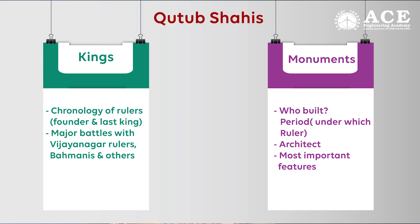The next dynasty to focus on is the Kutub Shahis. Questions cover the chronology of rulers, the founder, the last king, and the important kings. Then the major battles with the Vijayanagar rulers and the Bahmanis. Another very important area is monuments — like Charminar — who built them, under which ruler they were built, who is the architect, and the most important striking features of those monuments.